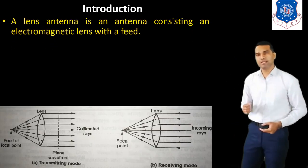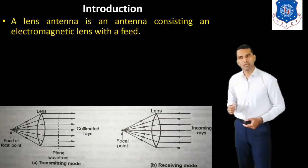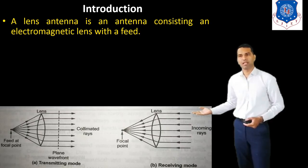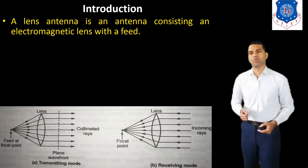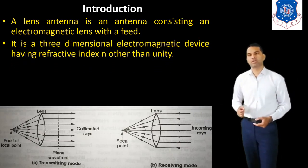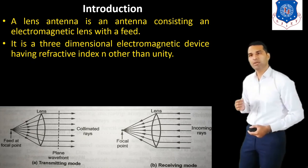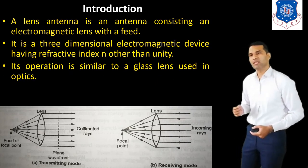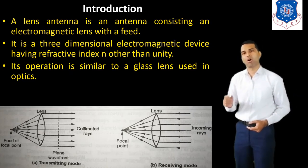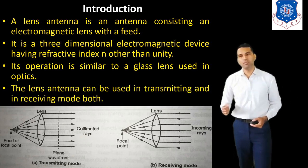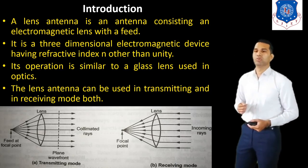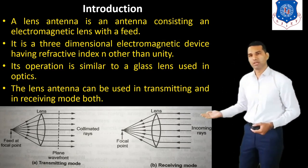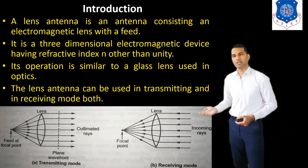A Lens Antenna is an antenna consisting of an electromagnetic lens with a feed. It is a three-dimensional electromagnetic device having a refractive index other than unity. Its operation is similar to a glass lens used in optics. The Lens Antenna can be used in a transmitting as well as in a receiving mode. In figure A, the Lens Antenna is used as a transmitting mode, and in figure B, it is used in the receiving mode.